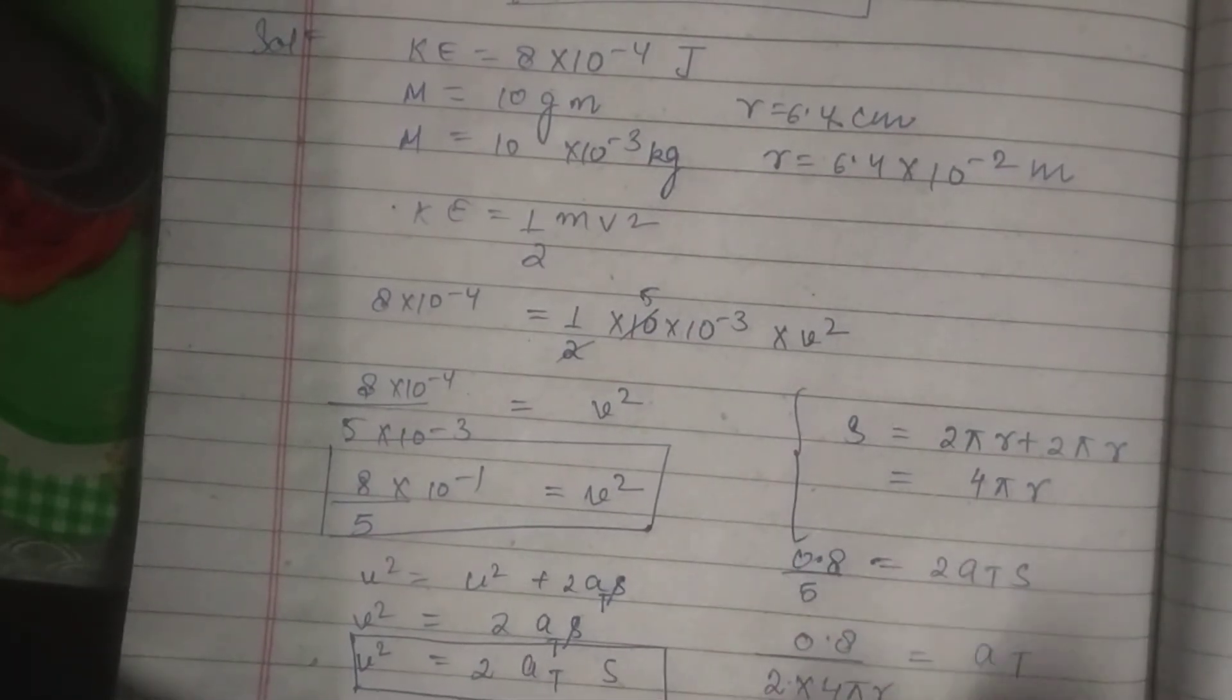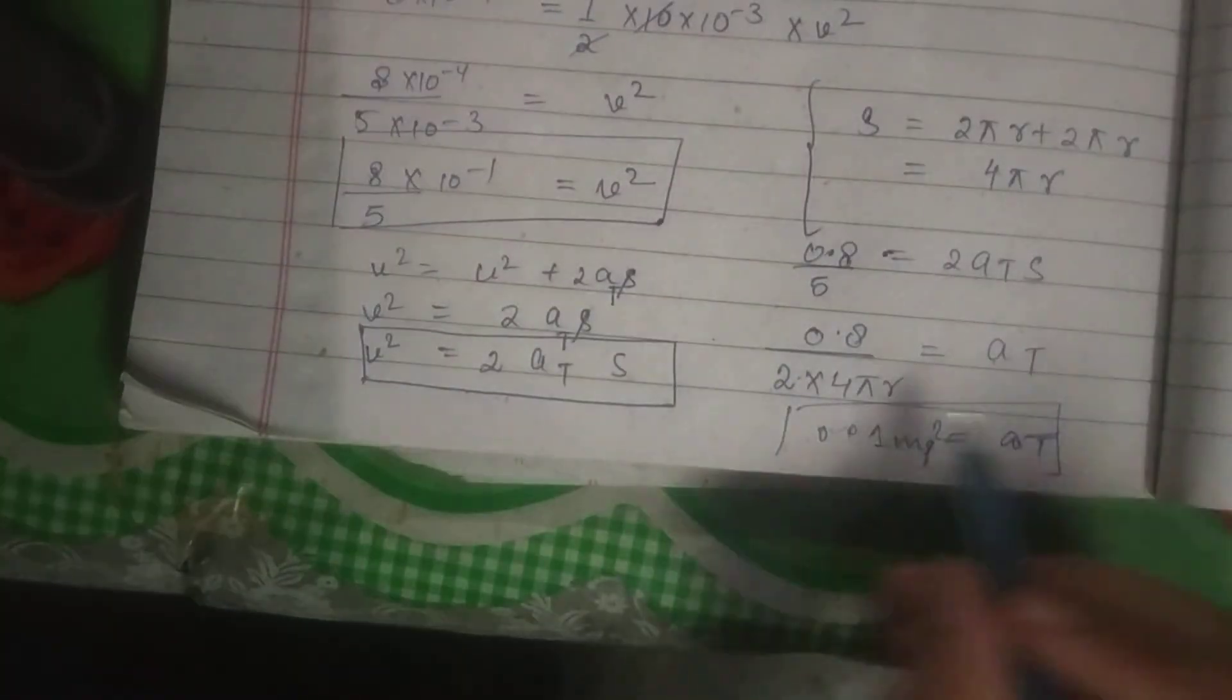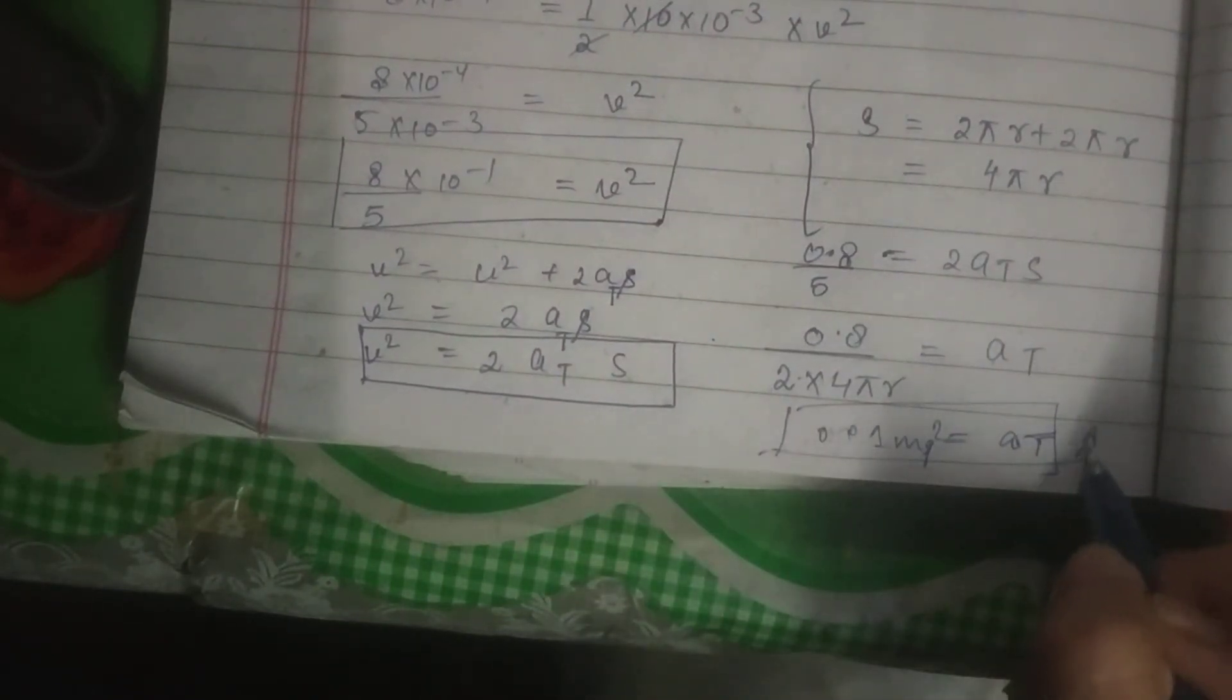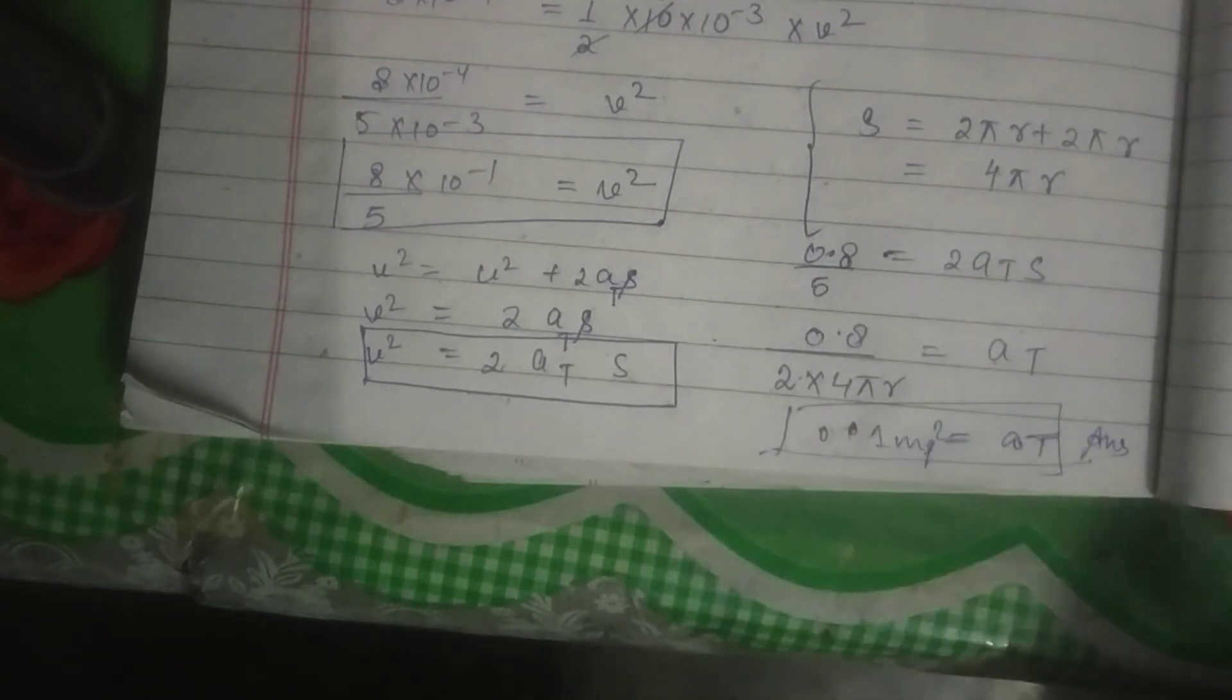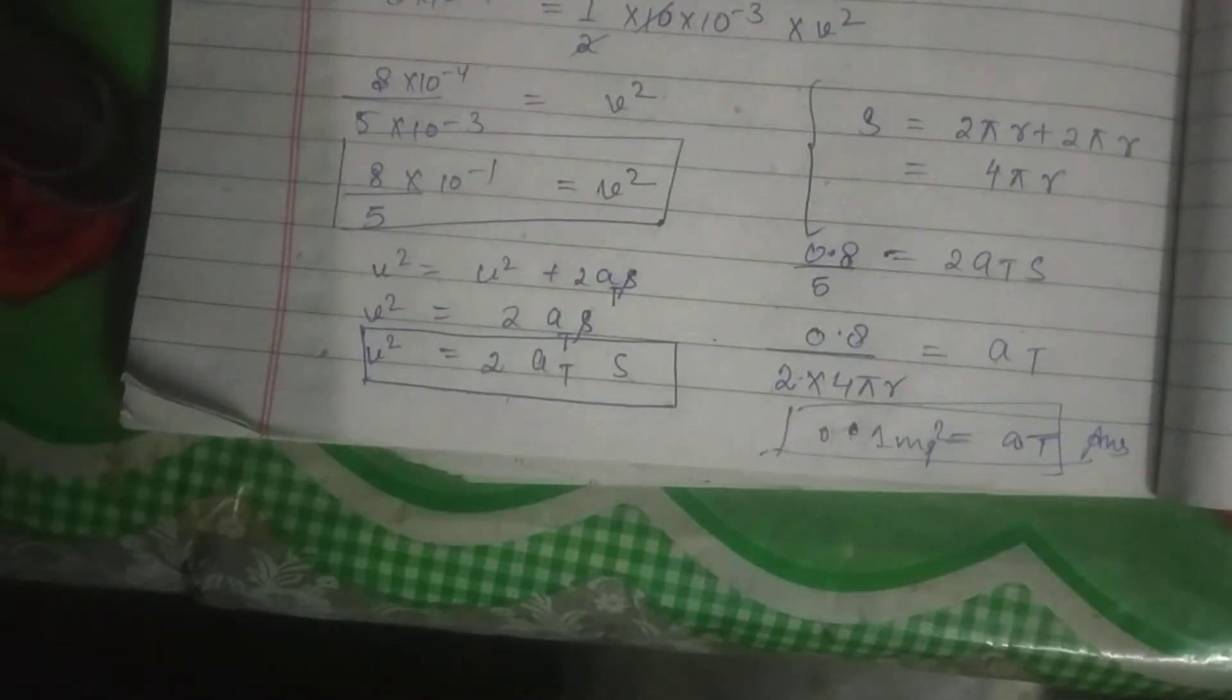So this is our final answer. a t is equal to 0.1 meter per second square, which is the tangential acceleration of the particle. Thank you.